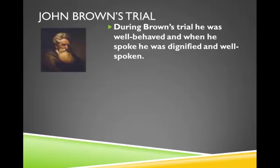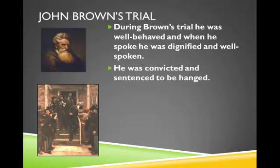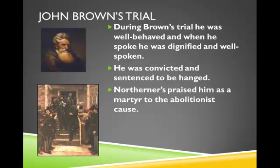John Brown's trial lasted for five days. During the trial he was very well behaved, well spoken, and dignified, but he kept saying that violence was the only way to solve the problem of slavery. He was convicted and sentenced to be hanged. Northerners praised John Brown as a martyr to the abolitionist cause — a martyr being someone who dies for a cause they believe in — and they focused on the fact that he was trying to free the slaves rather than that he had killed people.